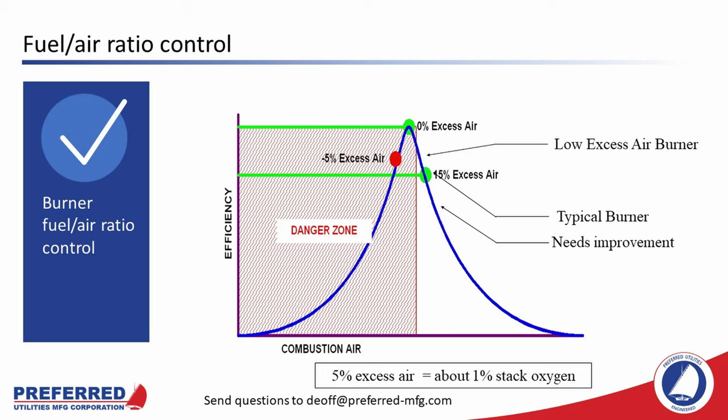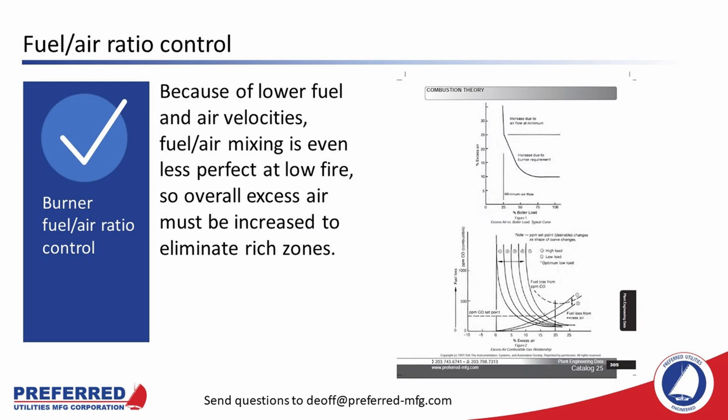This chart shows typical excess air levels and the danger zone if you burn too rich. Most burner manufacturers guarantee 15% excess air or 3% stack oxygen. Preferred burners will burn more efficiently — down to about 10% excess air or 2% stack oxygen. But note these excess air levels are at high fire only. Because of lower fuel and air velocities, fuel-air mixing is even less perfect at low fire, so overall excess air must be increased to eliminate rich zones. The diagrams in Preferred's catalog 25 show that excess air increases at lower firing rates — how much really depends on the burner.